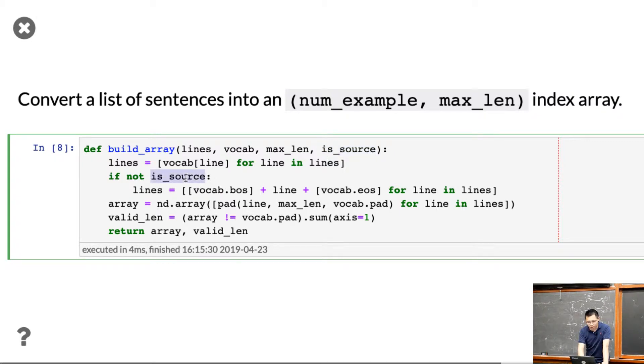So if it's not a source, we need to add the beginning of sentence before the line, and then add the end of sentence after the line. After that, we just pad a bunch of zeros to make it the same length. That's what we did before. Okay, so this is the only difference we have.